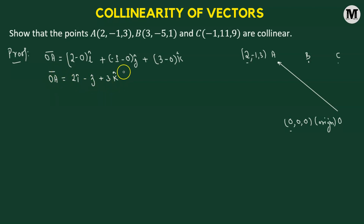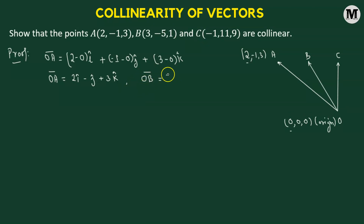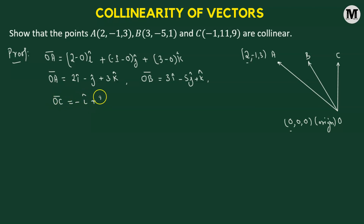Similarly, we can define the position vectors of points B and C by joining O to B and O to C with directed line segments. The OB vector is 3i-cap minus 5j-cap plus k-cap, and the OC vector is negative i-cap plus 11j-cap plus 9k-cap.